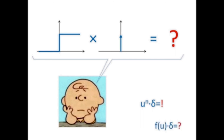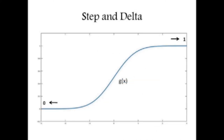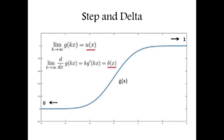The natural next question is: what is the product of f(u) times delta, where f is for example a smooth function? This is an extension of the previous case, since if we set f(x) = x^n we recover the original question. As before, we start from a smooth function g(x) going from 0 to 1. We define a limit for k → ∞ giving the unitary step function, and by differentiating this limit we define a limit giving the delta function. We then use these two functions to define a limit giving the distribution f(u) times delta.